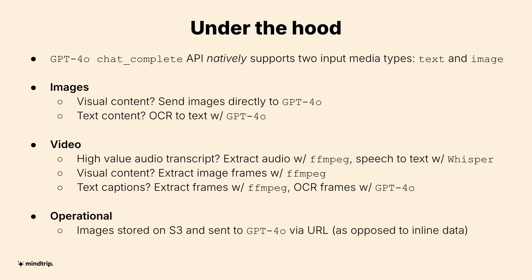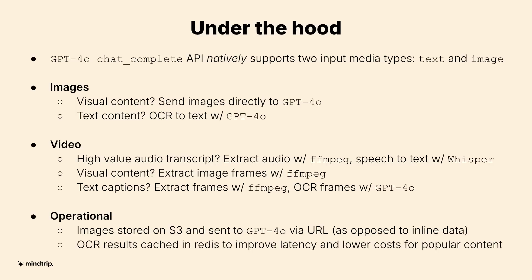Operationally, when you send images to the model, you can either give it a URL or do it inline as a data URL. We host them on S3 and send in a URL. And if you're doing any kind of post-processing like speech-to-text or OCR, you can cache those — which means if you've got a piece of content that's a little hot, you save money and reduce latency for users, which is win-win.